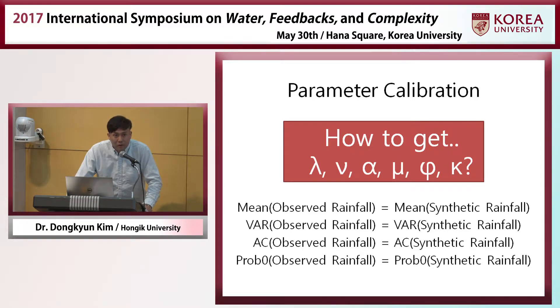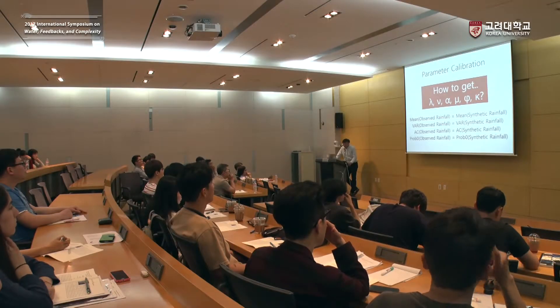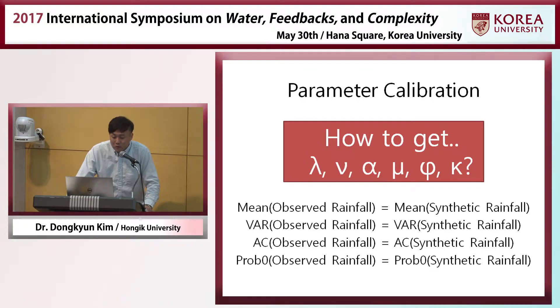How do we determine whether the synthetically generated rainfall is similar to the observed rainfall? We typically use second-order stationarity: if the first and second moments of the two time series are similar, the time series are considered quite similar. So we require that the mean, variance, and autocorrelation or covariance of the observed and synthetic rainfall match, as well as the probability of dryness — what is the probability that it will not rain at a given time step? If these four statistics are similar, we say the synthetically generated and observed rainfall are similar.